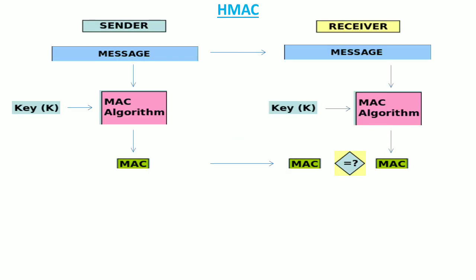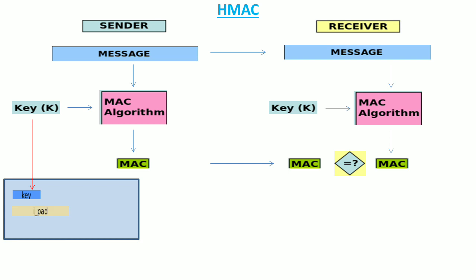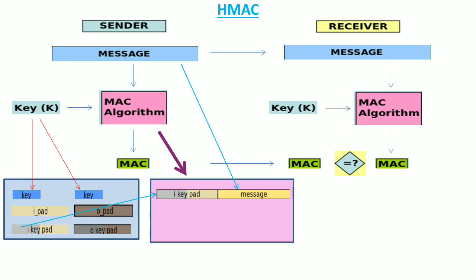HMAC is similar to MAC. The only difference is that in HMAC we do not use the key directly in the MAC algorithm. Rather, this key is used to generate two sub-keys. These two sub-keys are subsequently used with the message to generate a hash. The message is concatenated with the first sub-key, and then together they are hashed.